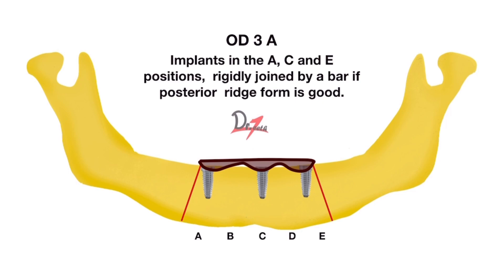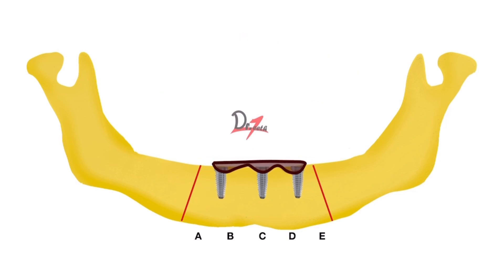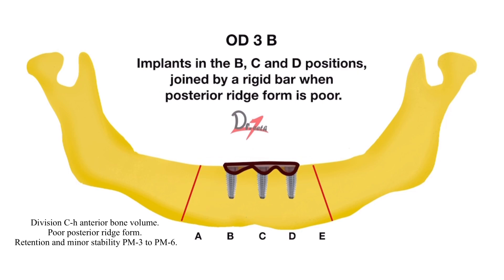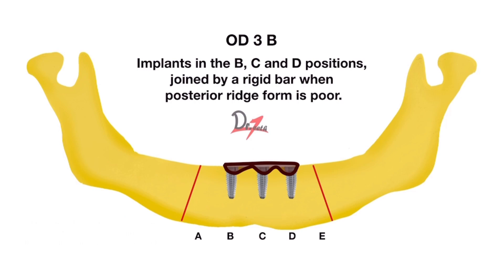Then we have OD3b. Here again we have implants, but at B, C, and D positions, joined by a bar. This is used when the posterior ridge form is poor. So OD3a was for good posterior ridge form, and OD3b is for poor posterior ridge form.